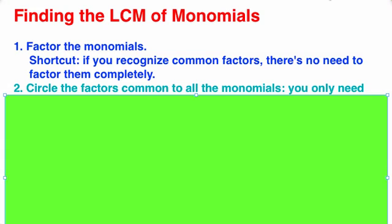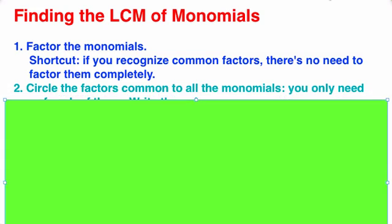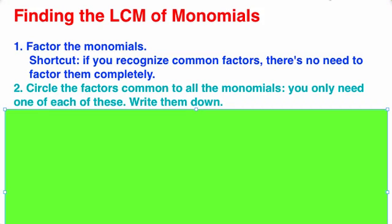Then you're going to circle the factors common to all the monomials. You only need one of each of these factors, so you're going to write them down.